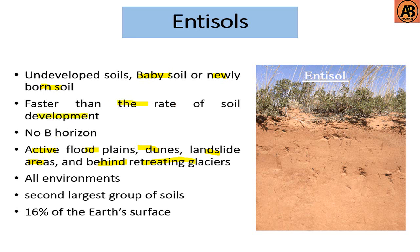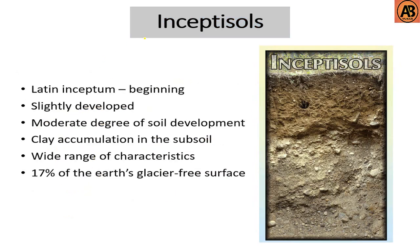The rate of deposition is faster than the rate of soil development. Entisols have no B horizon — only an A horizon is present. They can be found in all environments and are the second largest group of soils, occupying about 16% of Earth's surface.